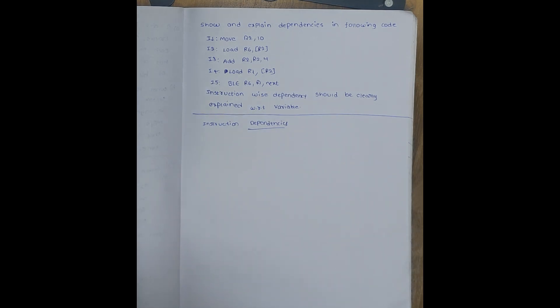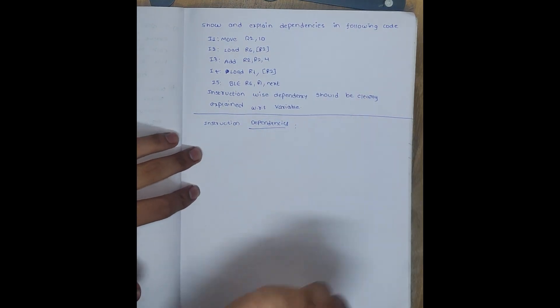This means the processor cannot execute them fully in parallel. It must wait until the required value is available. If the previous one is executed, then only the next one will be executed. So let me write the types of dependencies - how many types are there?